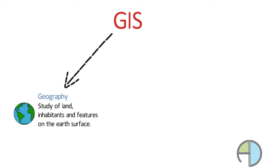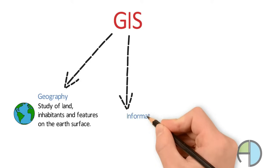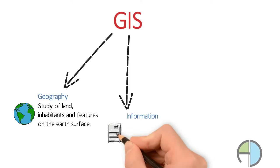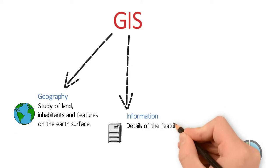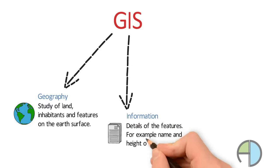I stands for information. Information talks about details of the features on the surface of the earth. For example, name of a building is an information.